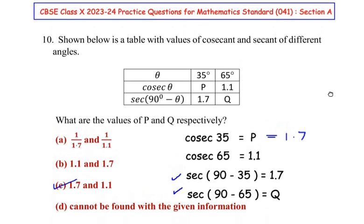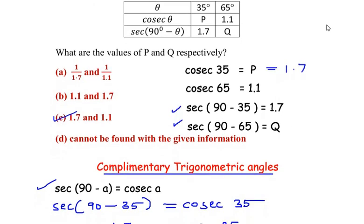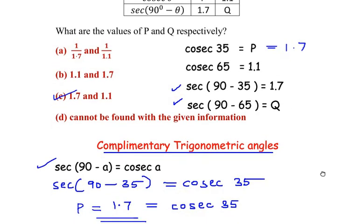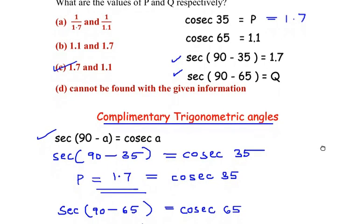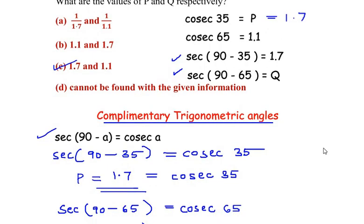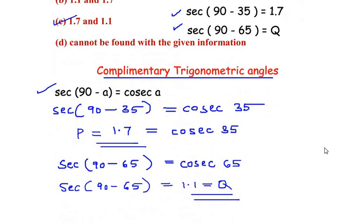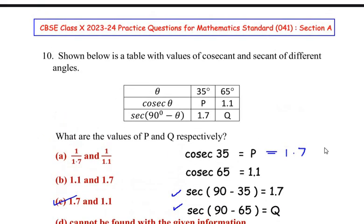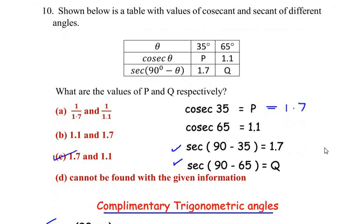So to solve this question we made use of the complementary trigonometric angles and formed a relationship between the secant and the cosecant angles to find the missing values. I hope you have understood all the steps and liked the video. If you are liking my videos, like, share, and subscribe to my channel. And thank you for watching.